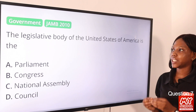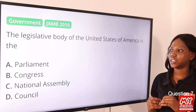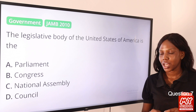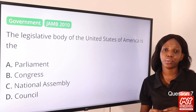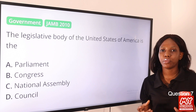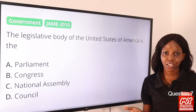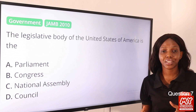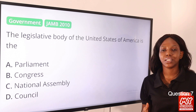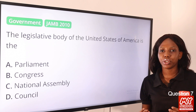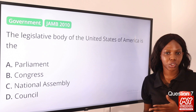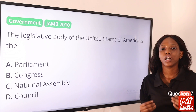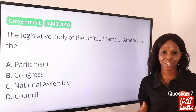Question 7: The legislative body of the United States of America is the — option A, parliament; option B, congress; option C, national assembly; option D, council. The answer is option B. The US Constitution divides the federal government into the legislative, the executive, and the judiciary. The legislative is called Congress, comprising the House of Representatives and the Senate. In Nigeria, the legislative is called the National Assembly, also comprising the House of Rep and Senate. But for the United States of America, it is called Congress. So option B is the final answer.